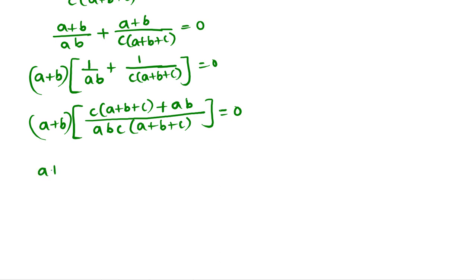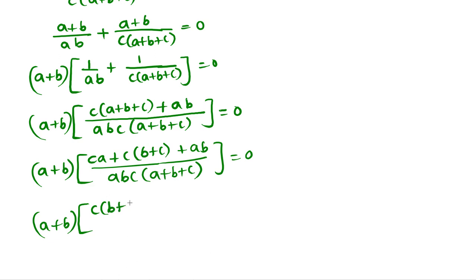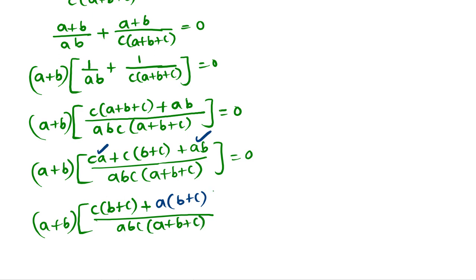Now let us simplify this. Taking the LCM of the denominators ABC(A+B+C), and distributing: we get C(A+B+C) plus AB. Distributing further gives CA plus CB plus C² plus CA plus AB. Grouping: C(B+C) plus A(C+B), and taking A as common from the latter terms gives A(B+C). So in the brackets we have C(B+C) plus A(B+C).